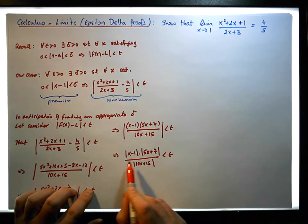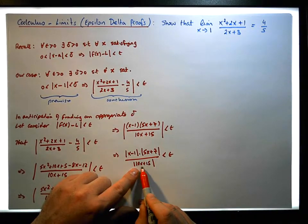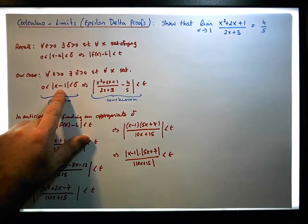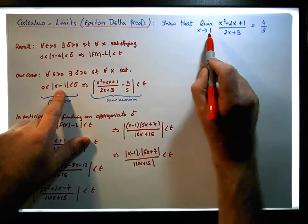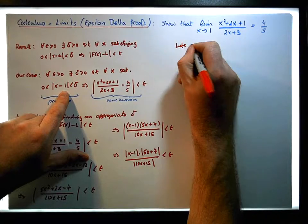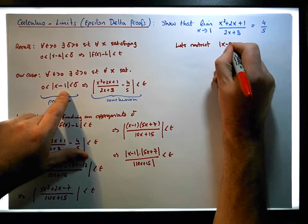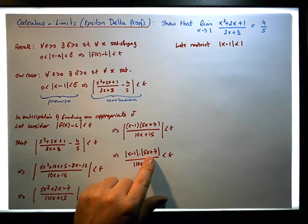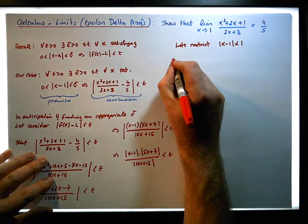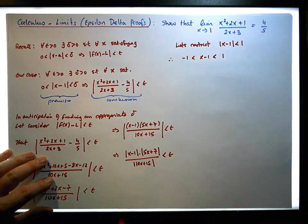So let's restrict and see what happens to 5x plus 7 and 10x plus 15 around where our limit is tending to. Let's restrict x minus 1 to be less than 1 and see what we get. Therefore we have that minus 1 is less than x minus 1, which must be less than 1.